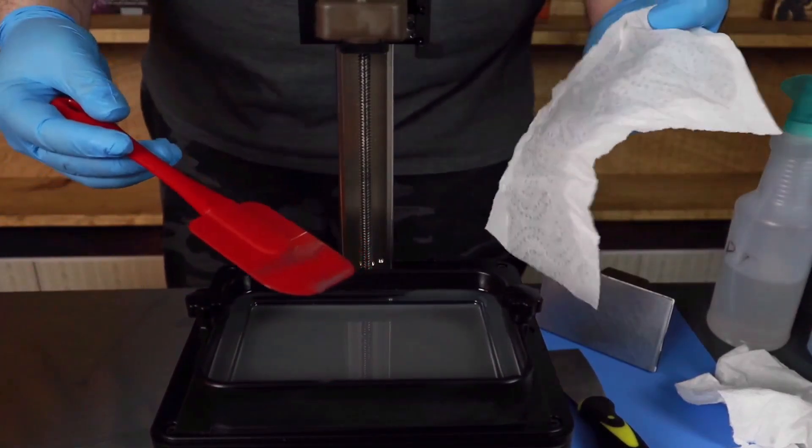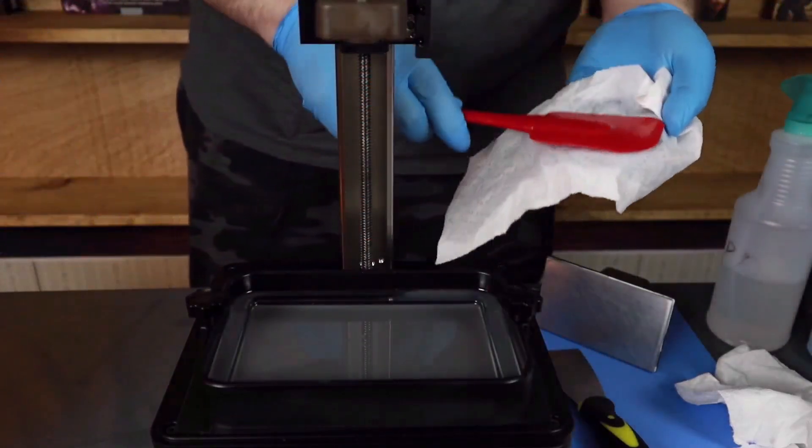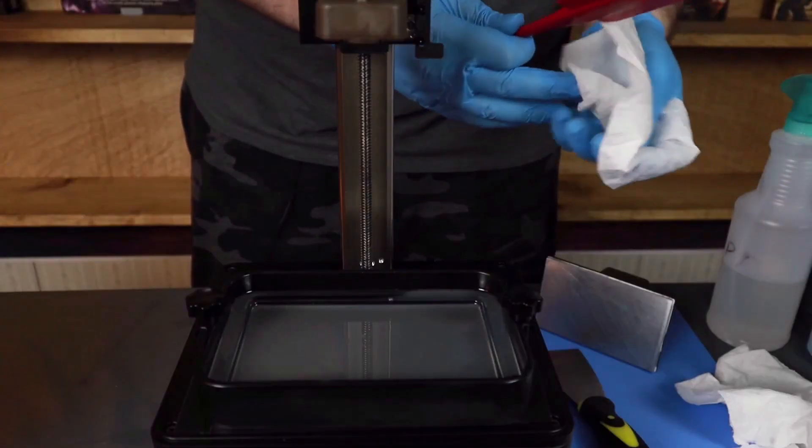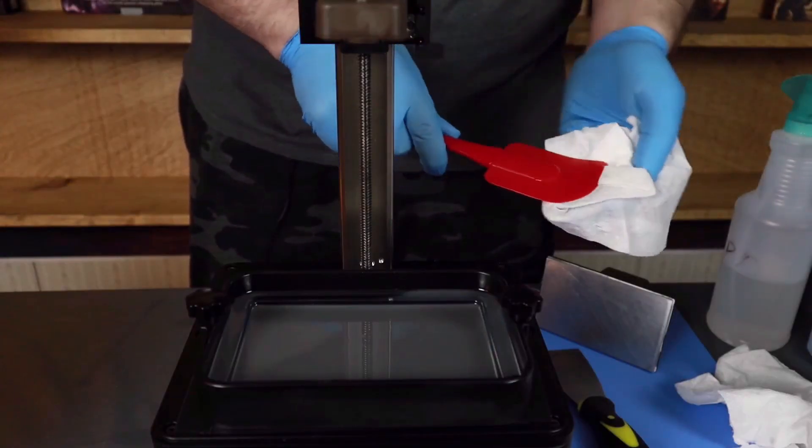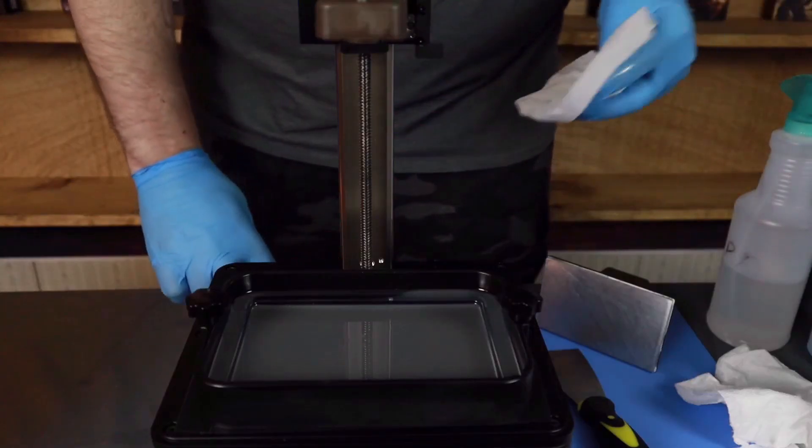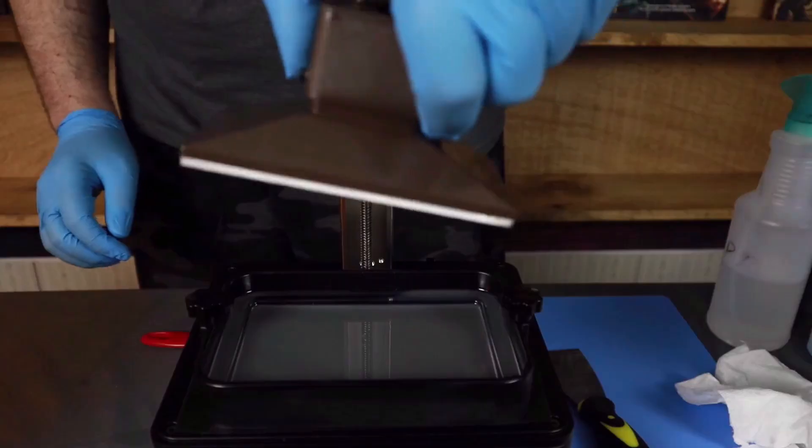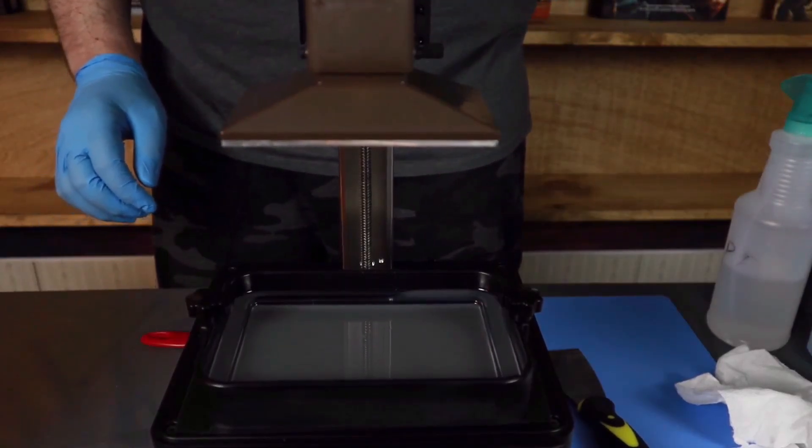Then I'm going to take one of my paper towels and I'm just going to clean off my spatula here, or technically, I guess this is a rubber scraper, not a spatula. I think there's a difference. I don't know. So I'm going to clean that off, make sure that I got it as clean as possible. And I'm going to put it away, put your build plate back on, tighten it up, and you're ready to start your next print.